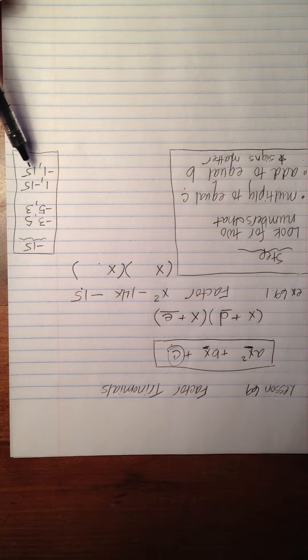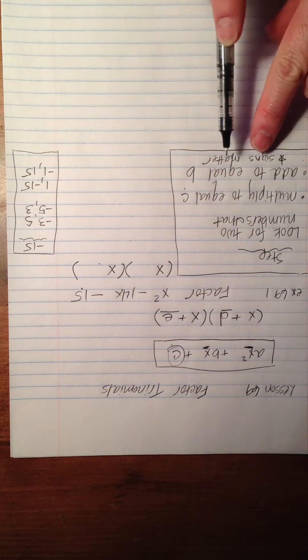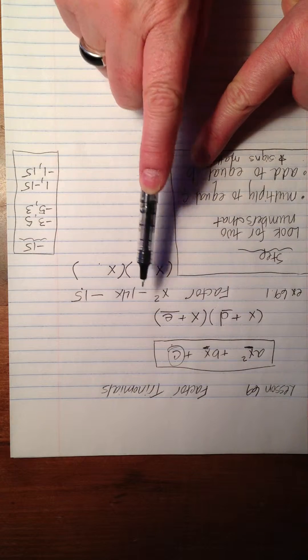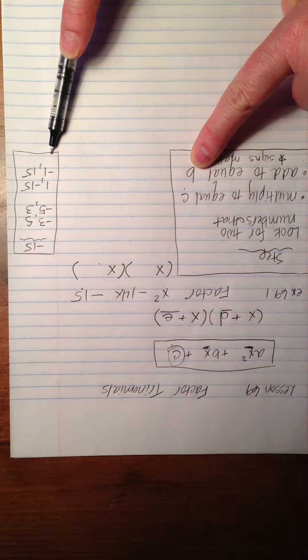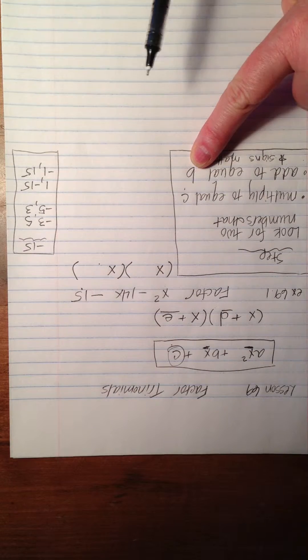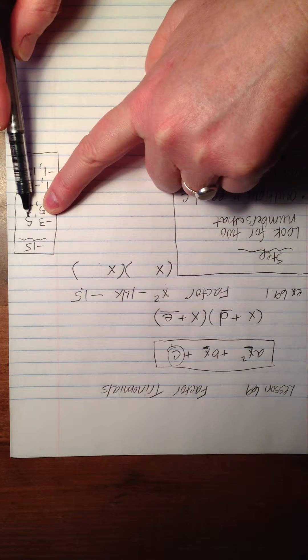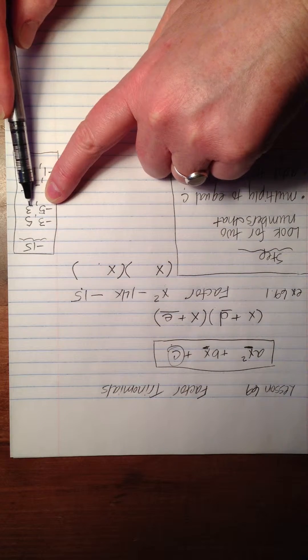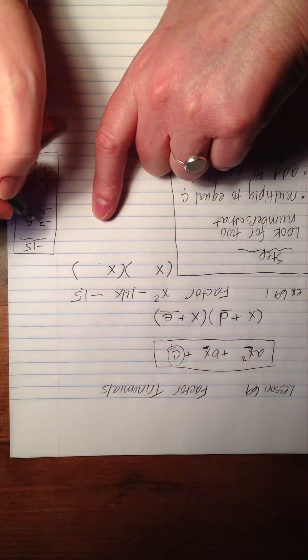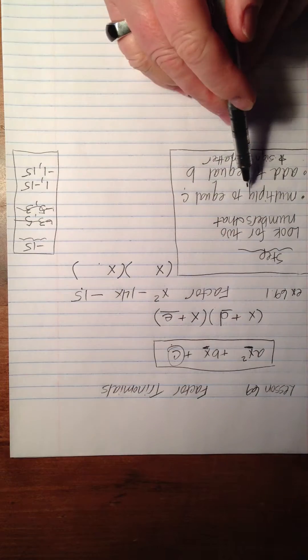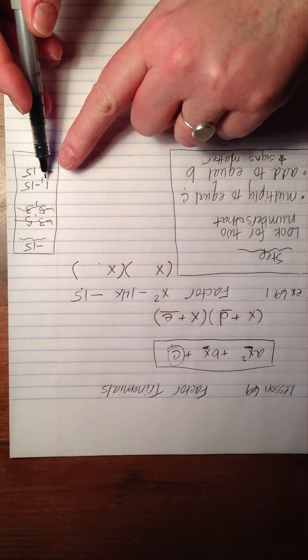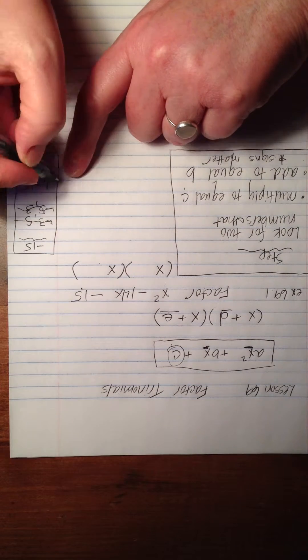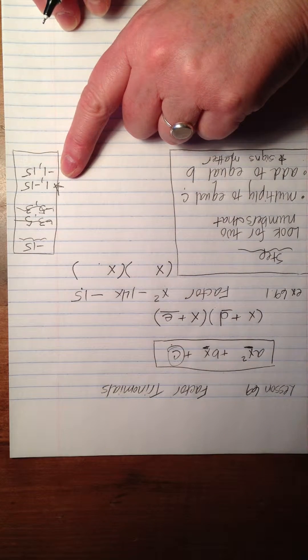Now what we do is we look among these numbers, and we look for the pair that will also add to equal b. b is -14. So now we're looking through these numbers for a pair that will add up to -14. We can see if we combine 5 and -3, that's 2. If we combine -5 and 3, that's -2, so these guys are not going to do it for us. They fulfill the first requirement, but they don't make the second. All right, the third pair is 1 and -15. If we add 1 and -15, we get -14. That is our money winner right there.